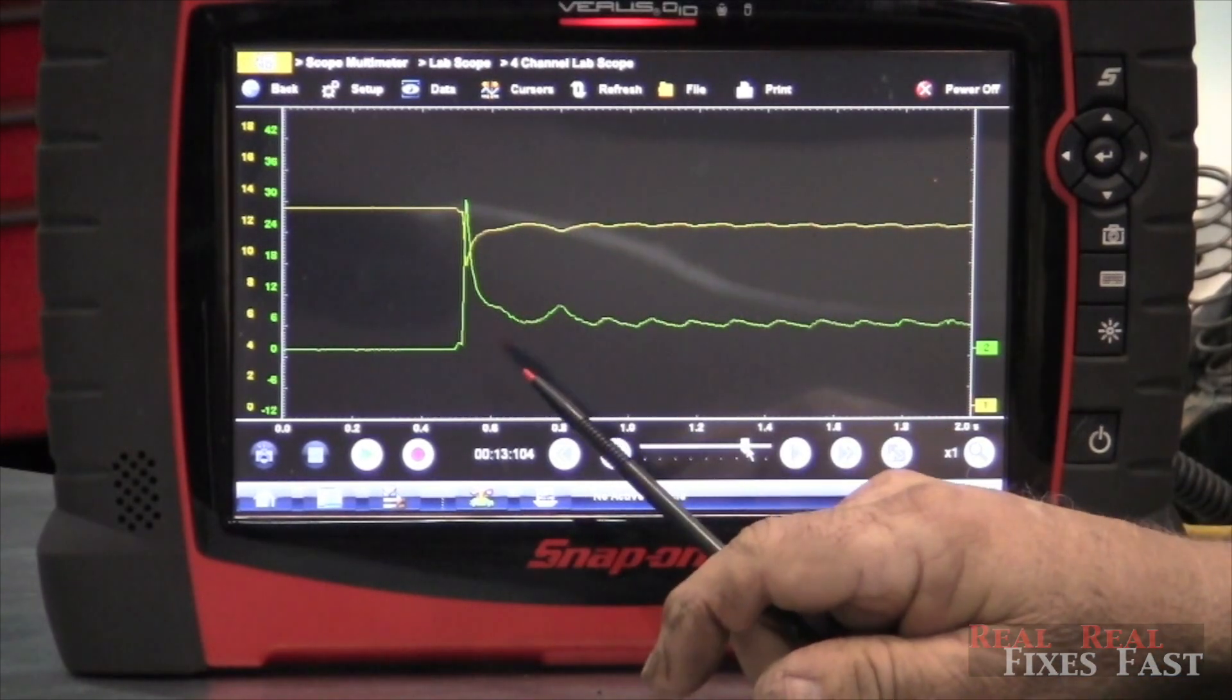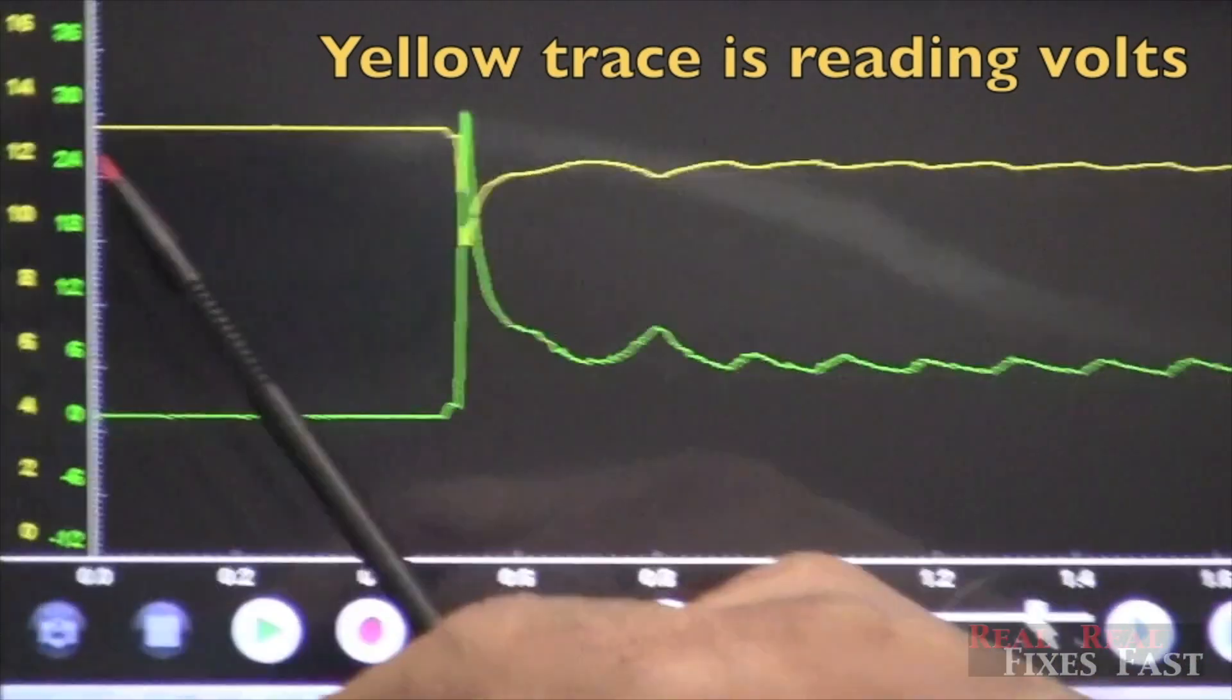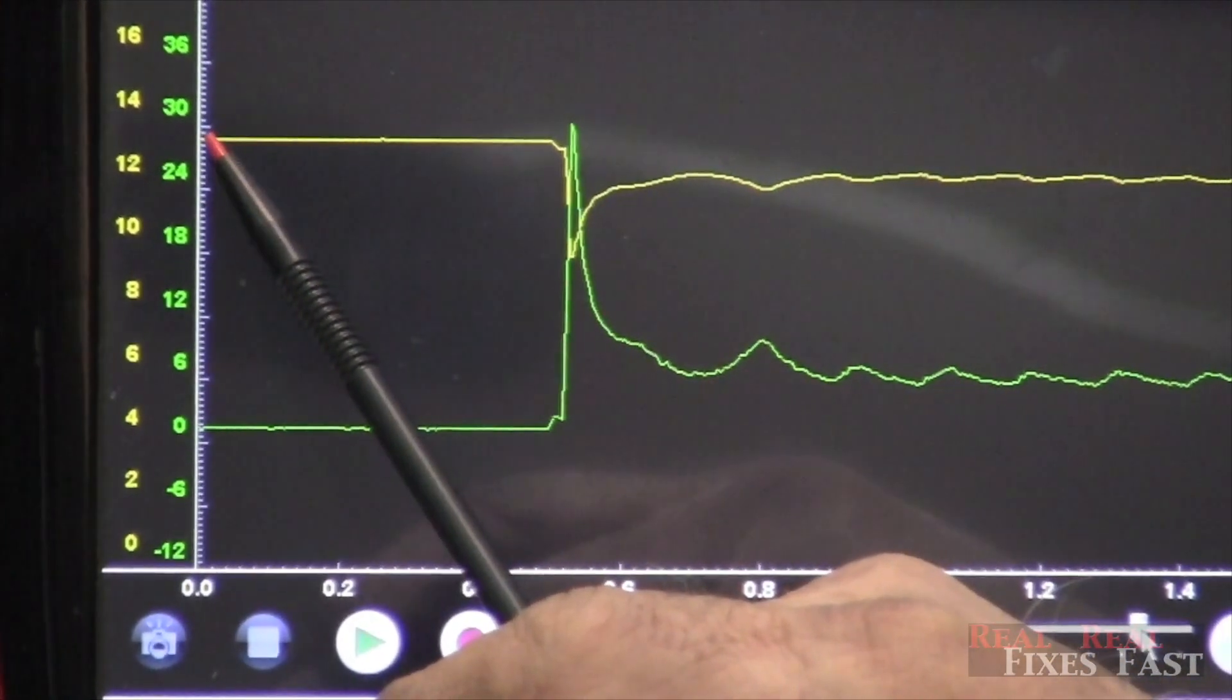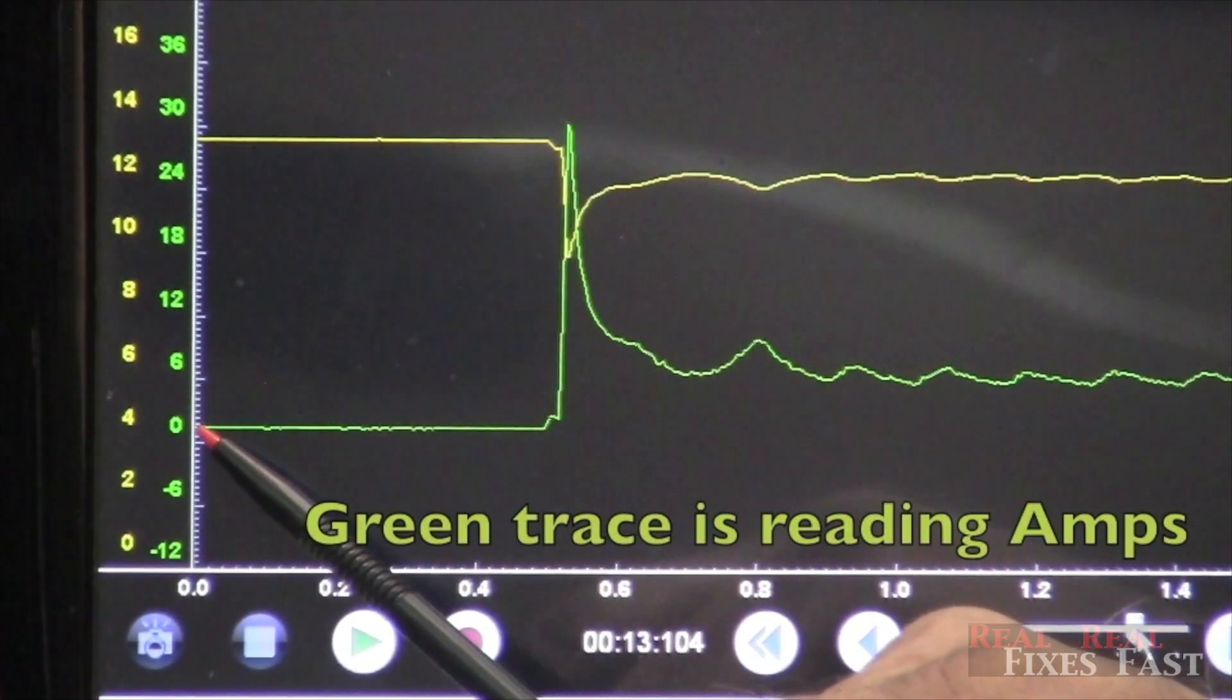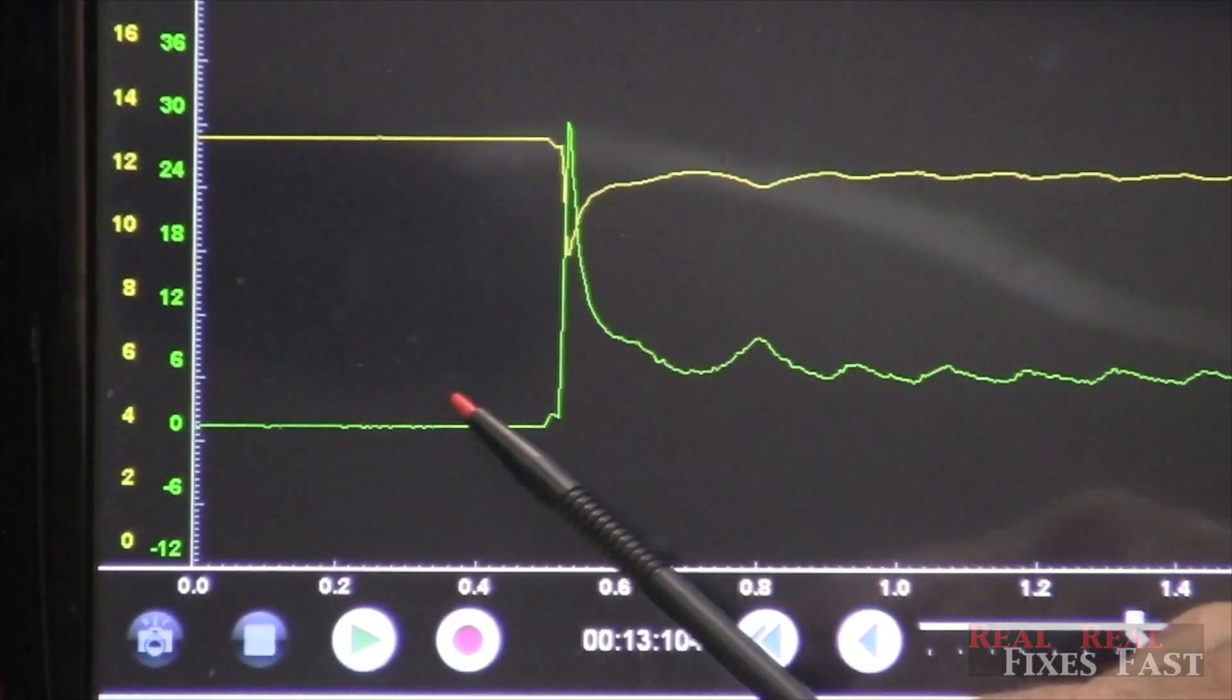Now I've got two channels going here. You can see the yellow, which is on channel one, is on voltage. This is with the key off when we're reading about 12 something, 12 to 13 volts. The green is reading zero. That's on amps.